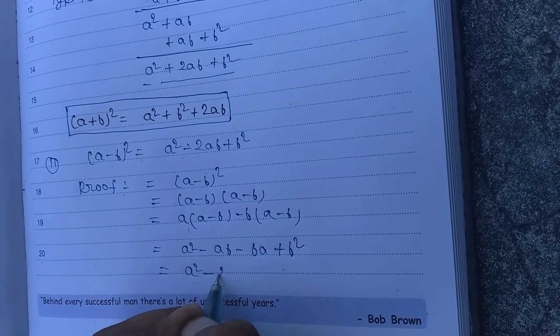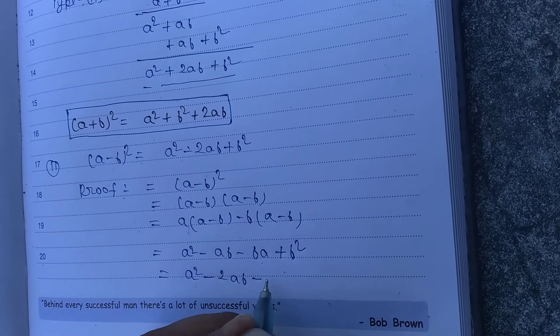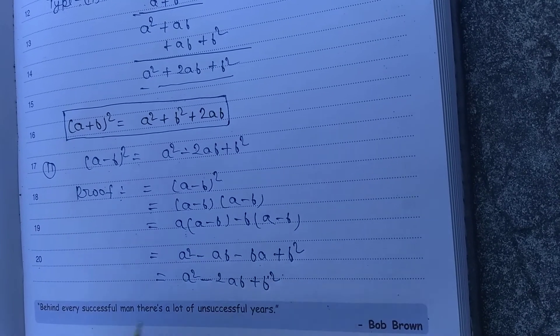A square minus 2 A B plus B square. We can write this here.